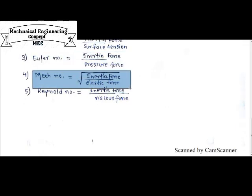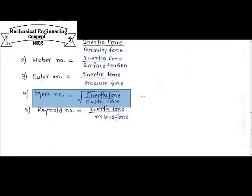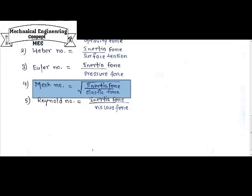Fourth is the Mach number. There is one catch here: not all of these numbers are in square root form, but Mach number is expressed as the square root of inertia force to elastic force. Inertia force is fixed in the numerator in all five numbers, but in the denominator, elastic force comes — because in mechanical engineering, elastic force relates to the initial elongation of a material. So Mach number is the ratio of the square root of inertia force to elastic force.